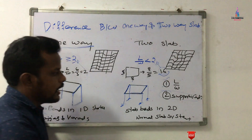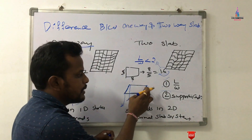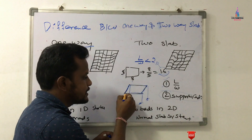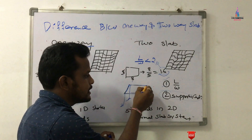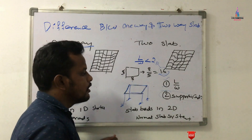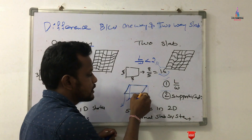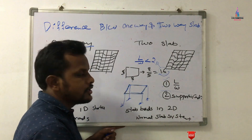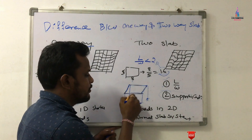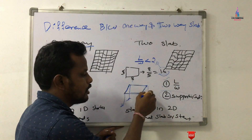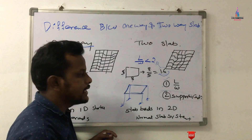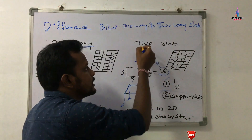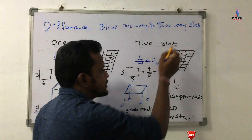In contrast, for a two-way slab system, the supporting members exist on all four sides. If you consider this slab, the supporting beam sections and vertical column members are present on all four sides, so it comes under the two-way slab system.